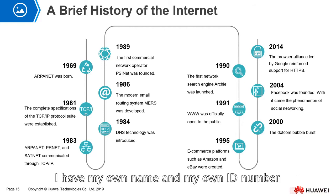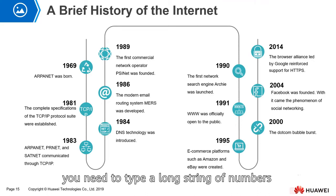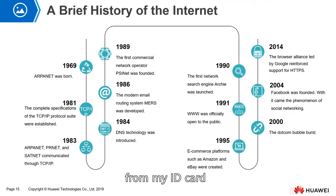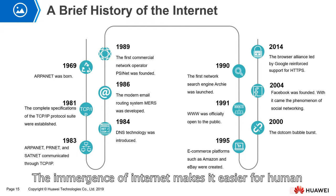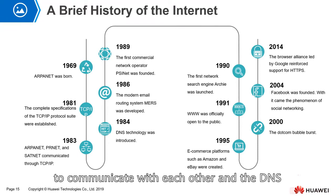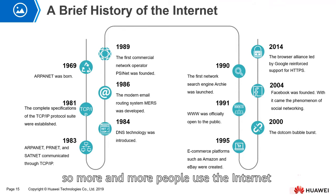For example, I have my own name and my own ID number. Without DNS, you need to type a long string of numbers from my ID card. With DNS, you can just type my name to find me. The emergence of the internet made it easier for humans to communicate, and DNS made it even more convenient, so more and more people began using the internet.